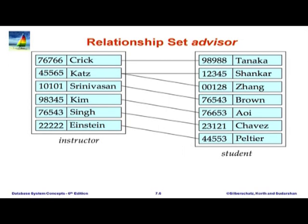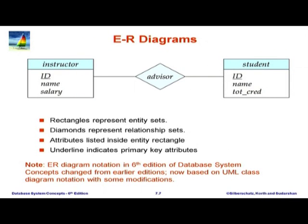The same advisor relationship set is shown using lines connecting entities — Krik with Tanaka, Kats with Shankar and Zhang, and so forth. Note that because it is a binary relation, a single line suffices. If it were a ternary relationship a slightly different representation would be needed. We will use a more formal diagrammatic notation for denoting entities and relationships.